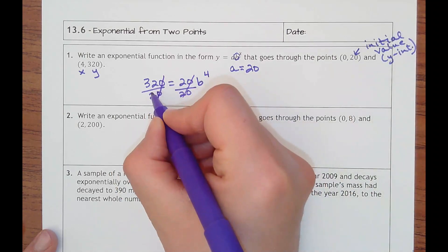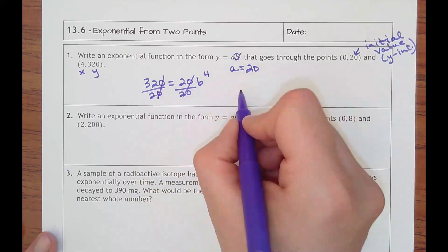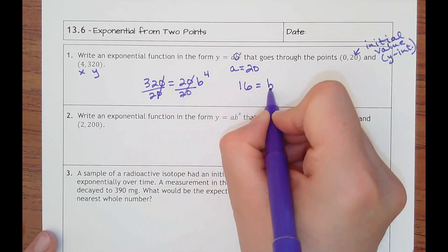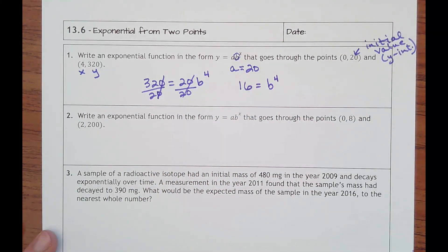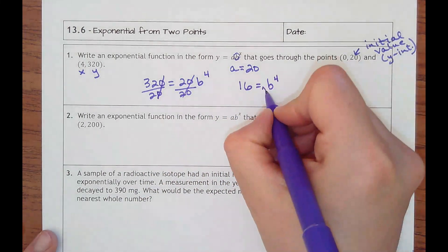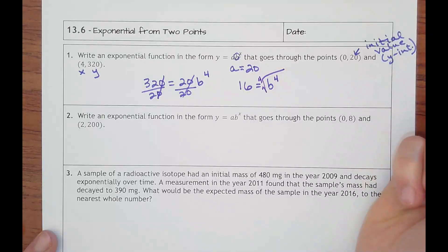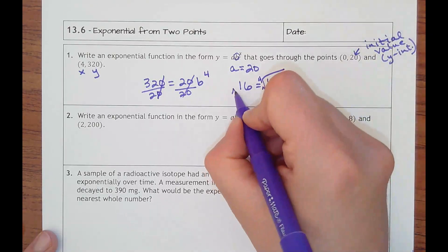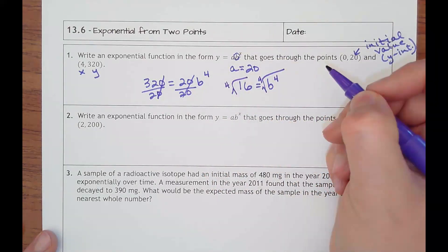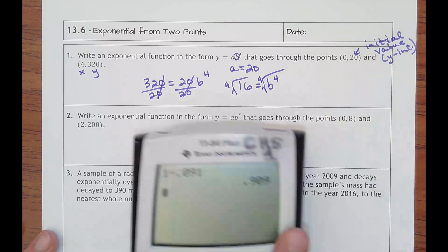I can do some mental math here. The zeros are going to cancel. 32 divided by 2 is 16. So I get that 16 equals b to the 4th. If I want to get rid of the 4th power, I have to do the opposite of that, which is to 4th root it.